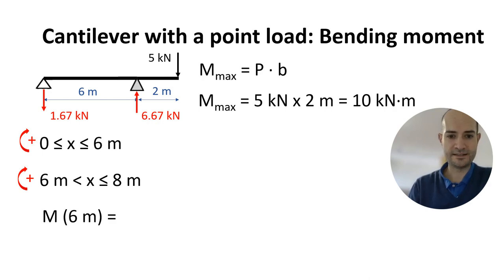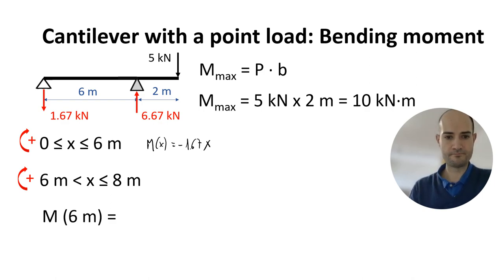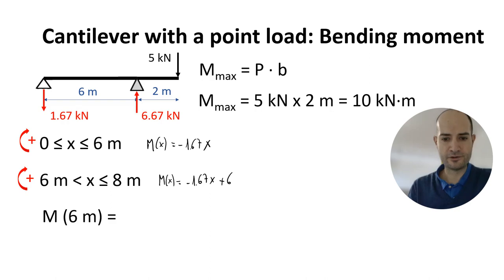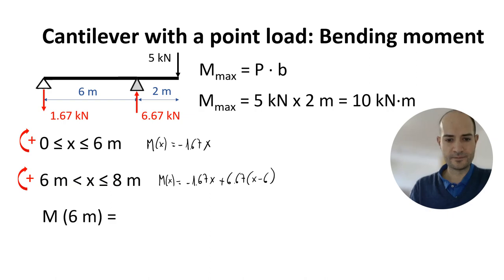Starting from the left-hand side we have minus 1.67 times x. From 6 to 8 meters we get minus 1.67x and then we add the fulcrum reaction: 6.67 times (x minus 6). So if we calculate at x equals 6 meters we will get minus 1.67 times 6 meters, which gives minus 10 kN·m.